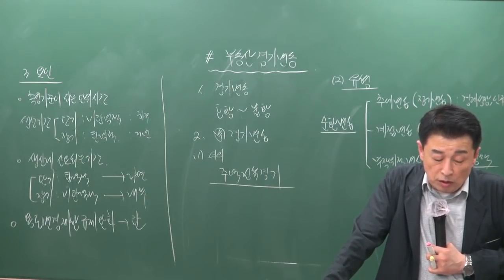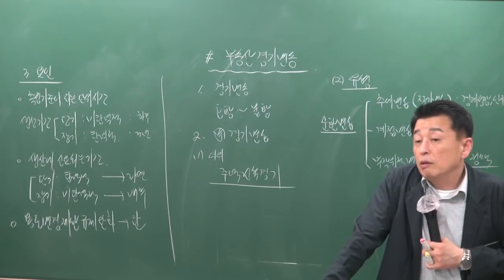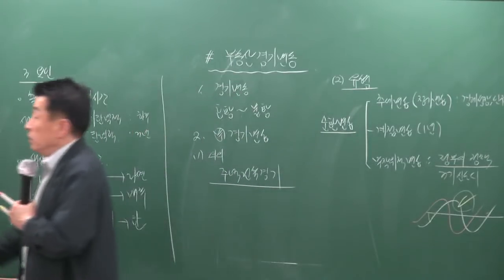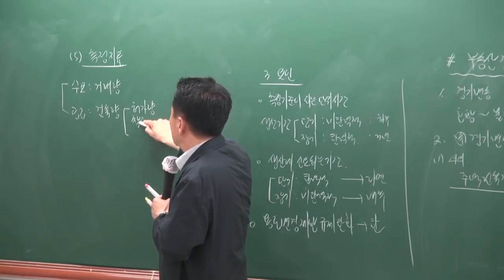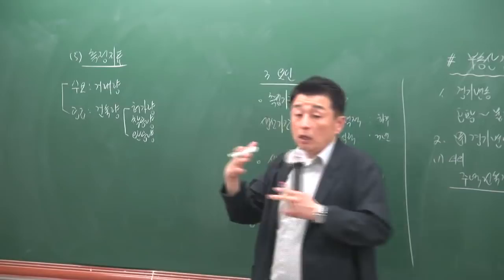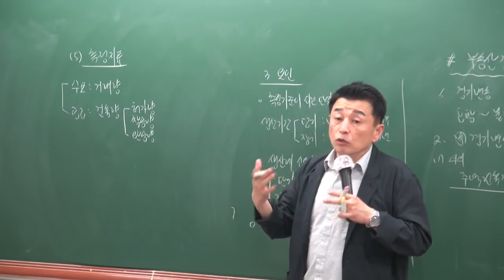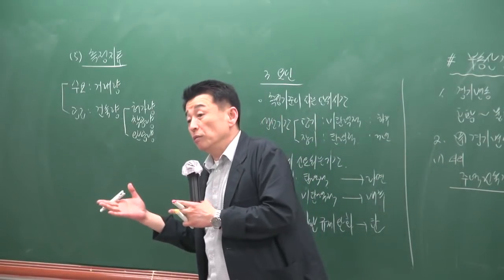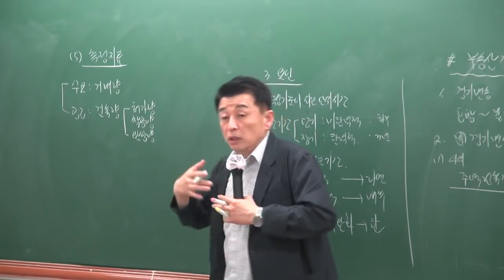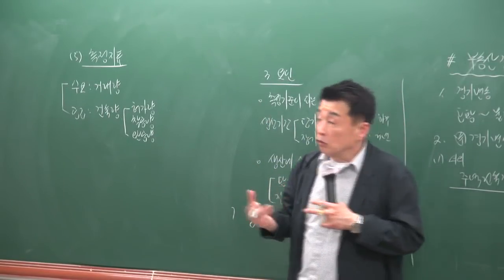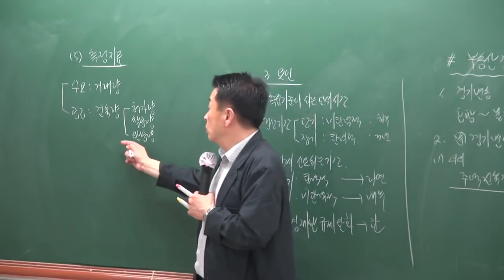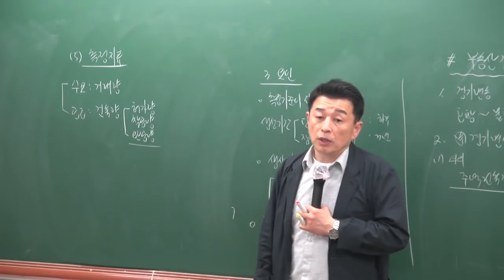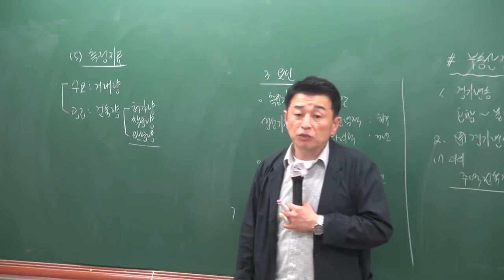건축량은 선행지표·동행지표·후행지표로 세분할 수 있어요. 건축허가량은 앞으로 공급이 늘어날 조짐을 나타내는 선행지표, 건축착공량은 현재 경기를 나타내는 동행지표, 건축완공량은 지난 경기를 확인하는 후행지표예요. 현실적으로 완공량은 측정이 어려워서 일반적으로 허가량과 착공량을 대리지표로 사용해요.